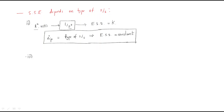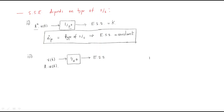Now the third point: if you are giving a ramp signal as input, then what happens? The ramp signal is given to the same system, which is s power 0. The steady-state error formula for ramp is 1 by kv.